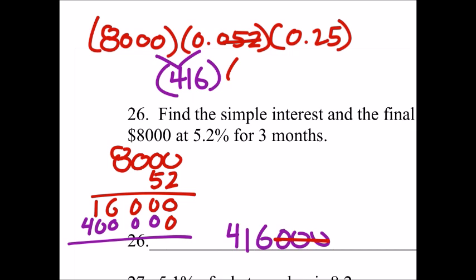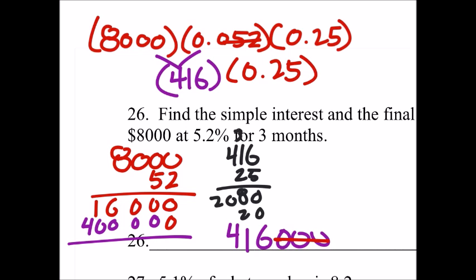Times 0.25. And what does that give us? 416 times 25 is 830, 820, 8320. Yeah, 2080, 8320.